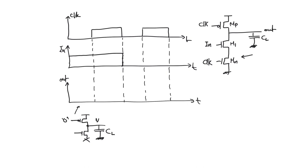The output in this case will always be VDD because the PMOS transistor MP provides a path to supply, regardless of the input voltage. Therefore, whenever we have a zero phase for the clock the output is VDD and carries no logic value — no function is being performed. We call this the pre-charge phase because we charge the output node up to VDD ahead of the upcoming one phase of the clock.